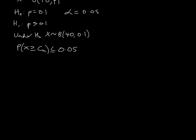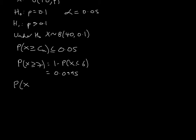Looking at the table, we need to find the values just above and just below a probability of 0.05. The probability that X is greater than or equal to 7 is 1 minus the probability of X less than or equal to 6 — that is clearly above 0.05. The next one: the probability that X is greater than or equal to 8 is 1 minus the probability of X less than or equal to 7, which gives us a probability of 0.0419.